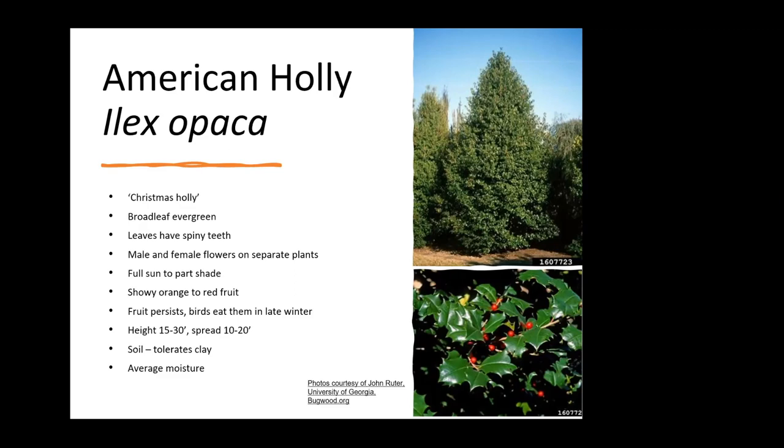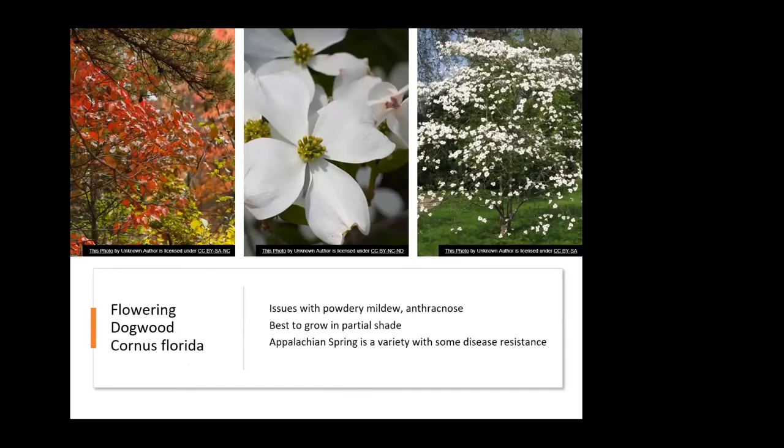Flowering dogwood, in spite of its problems with powdery mildew and anthracnose, we all love it. It's best to grow it in partial shade and to look for cultivars that have some disease resistance — Appalachian Spring has a pretty high resistance to both powdery mildew and anthracnose.